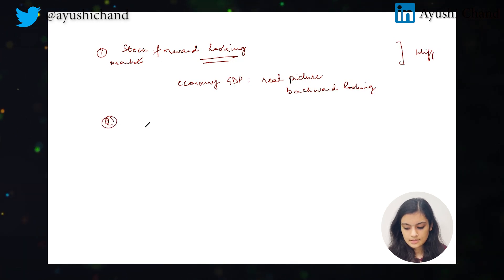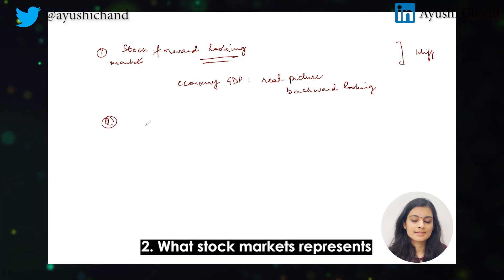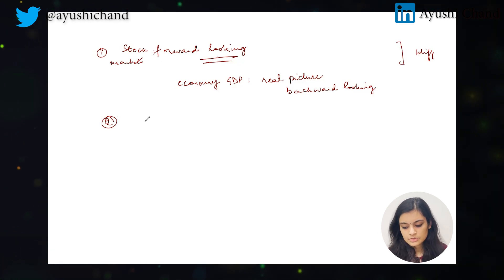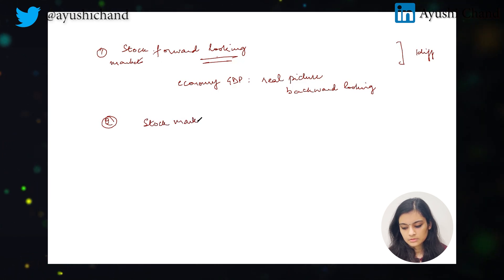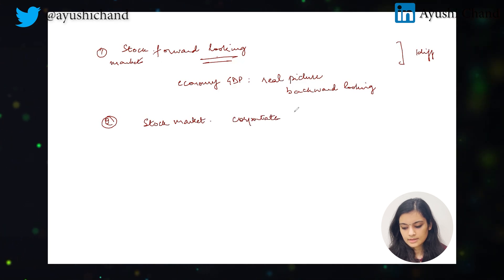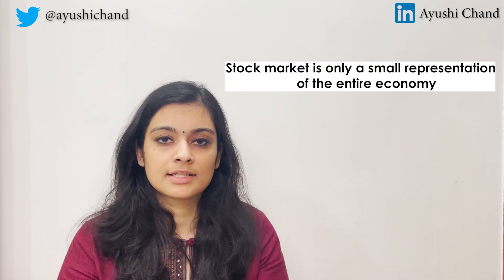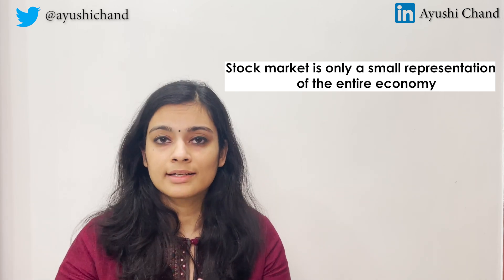The second difference is related to what stock markets represent. Stock markets, measured by something like Nifty 50, represent only certain corporates and their profits. However, GDP is the sum of different sectors — agriculture, manufacturing, service sector. GDP is a broad measure whereas stock markets are only a small representation of the entire economy.